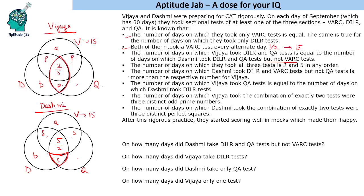Let us figure out where to start. We know these are prime numbers and those are square numbers — there are only a handful of each. Suppose Vijaya's all-three value is 5 and Dashmi's is 2. Then 5 plus a prime P should give a perfect square. If the square is 9, P is 4 — not prime. If the square is 16, P comes out as 11, which works mathematically.